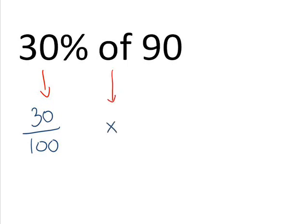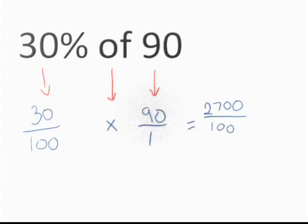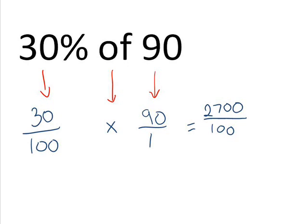And then you put ninety into a fraction as well, ninety over one. Nine divided by one is still ninety. So, then you just multiply this out. Thirty times ninety is twenty-seven hundred. A hundred times one is a hundred. And then you have to just work out what twenty-seven hundred is divided by one hundred, which is twenty-seven.